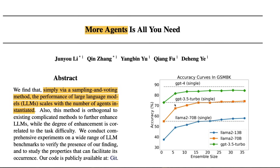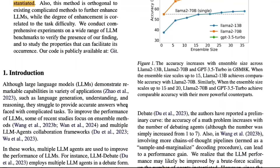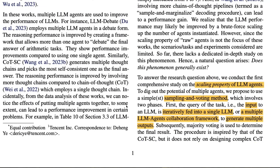In this 'More Agents Is All You Need' framework, they explore the scaling property of LLM agents: can we scale the number of LLM agents to achieve a better outcome rather than relying on one single model? This is analogous to building a random forest from decision trees. Instead of one tree, you build a forest. The method has two phases: sampling and voting.